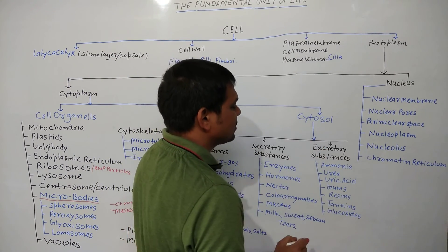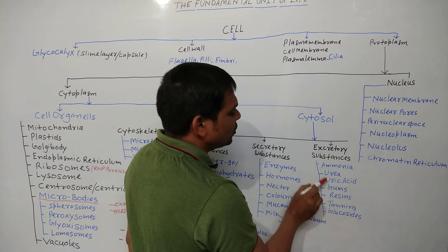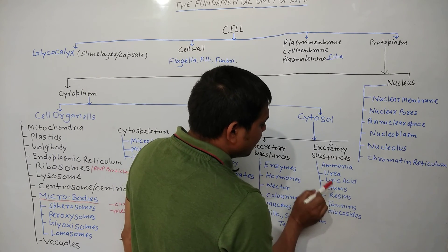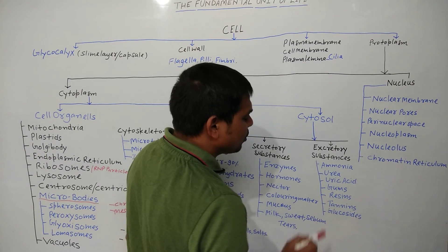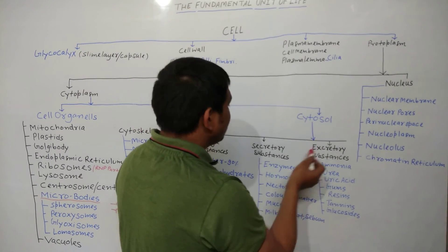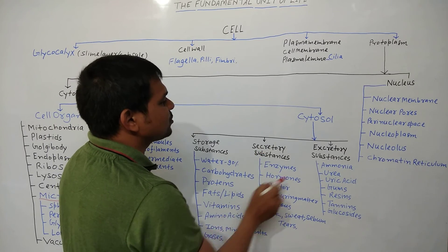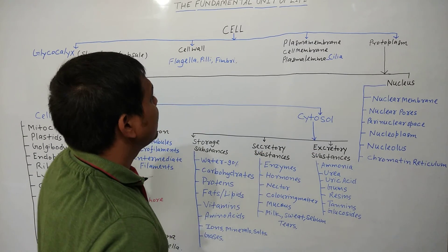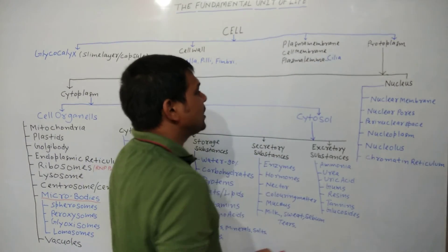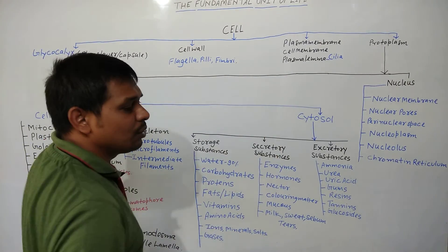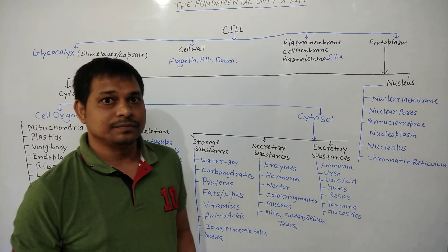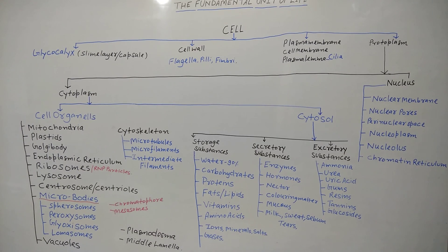Excretory substances in animal cells include ammonia, urea, and uric acid. In plant cells, excretory substances include gums, resin, tannins, and glucosides. So cytosol is divided into storage substances, secretory substances, and excretory substances. In the next lecture, we will discuss in detail what is protoplasm, what is cytoplasm, and what is cytosol, and we will also explain plasmodesmata and middle lamella.